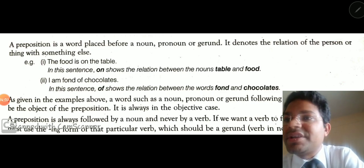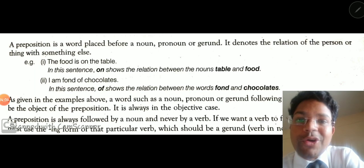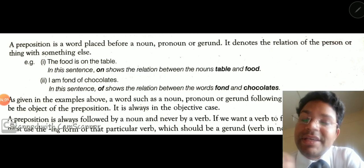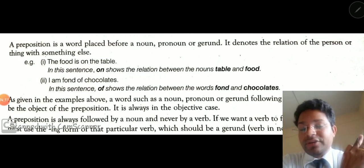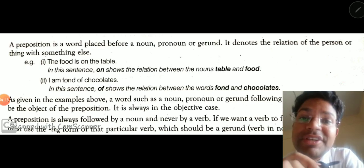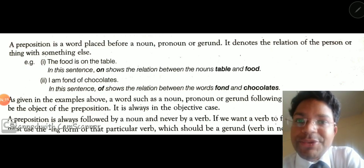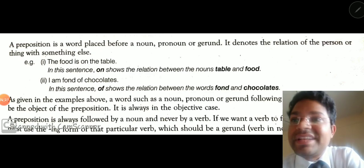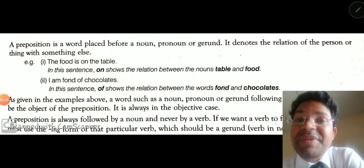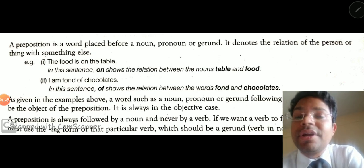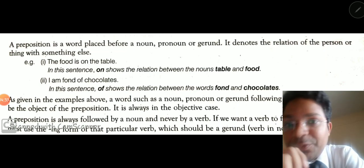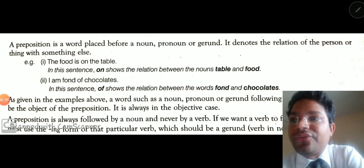The second example is: 'I am fond of chocolate.' Here, 'I' is the subject and 'chocolate' is the object. The relation between 'I' and 'chocolate' is shown by the preposition 'of.' If we don't put 'of,' the sentence becomes 'I am fond chocolate,' which doesn't make any sense. That is why the appropriate preposition in this sentence is 'of.'